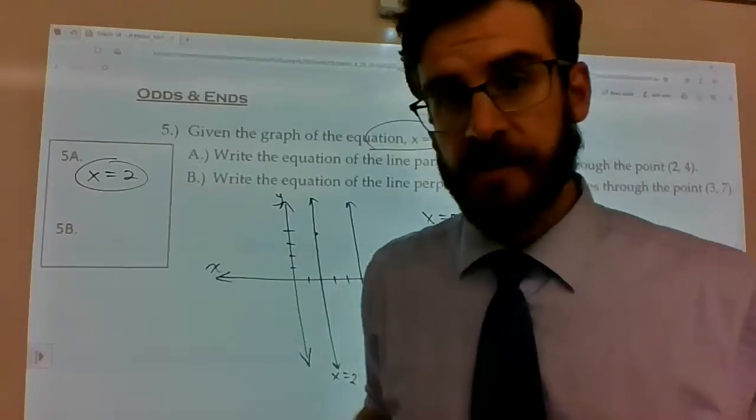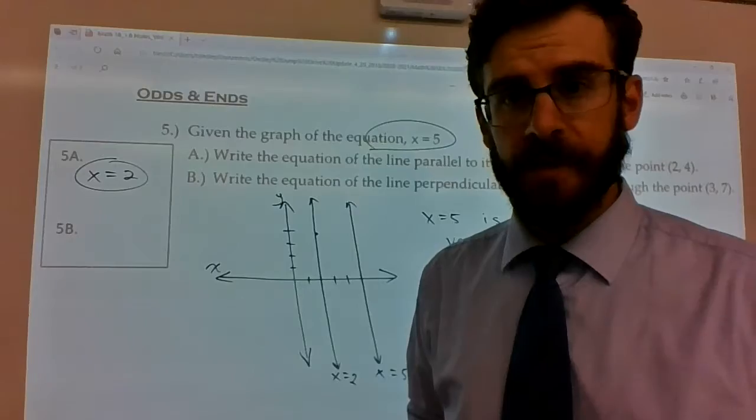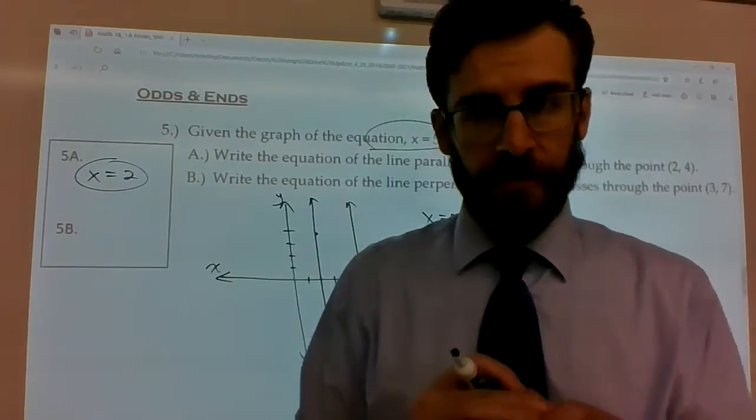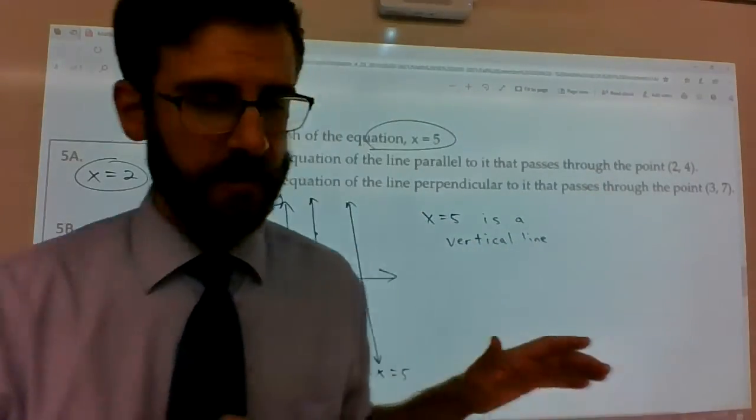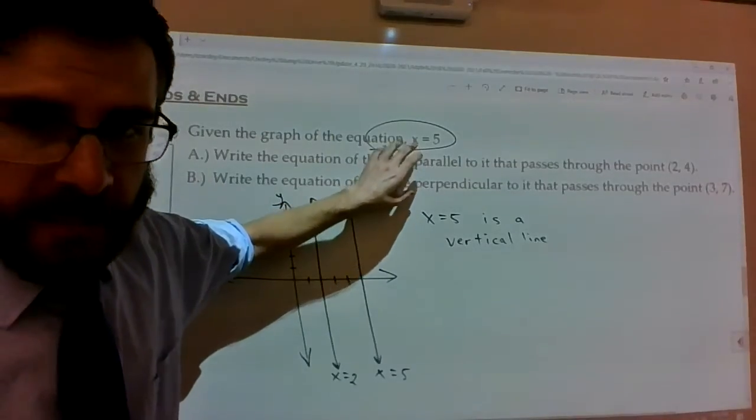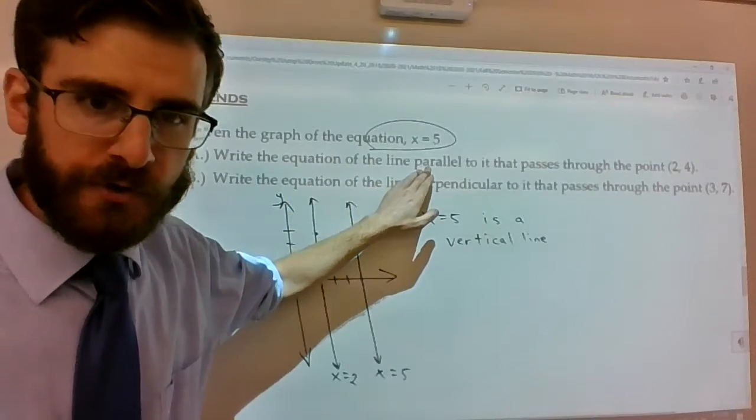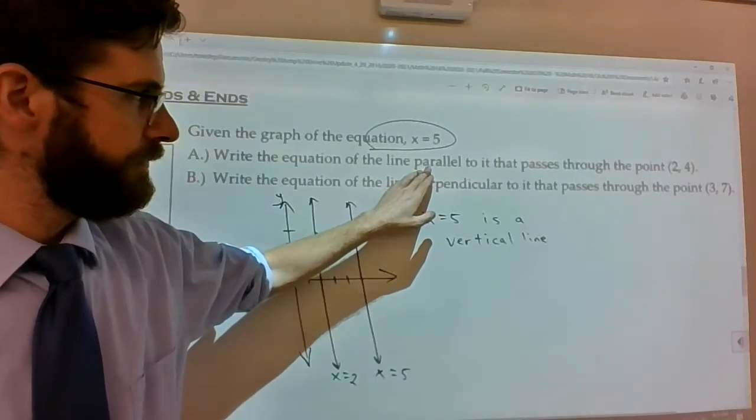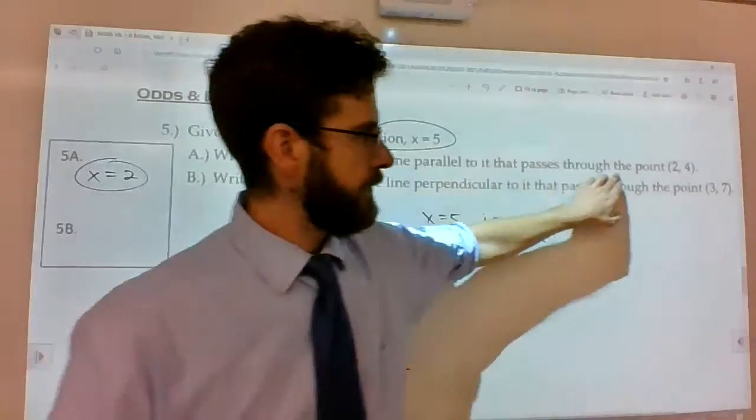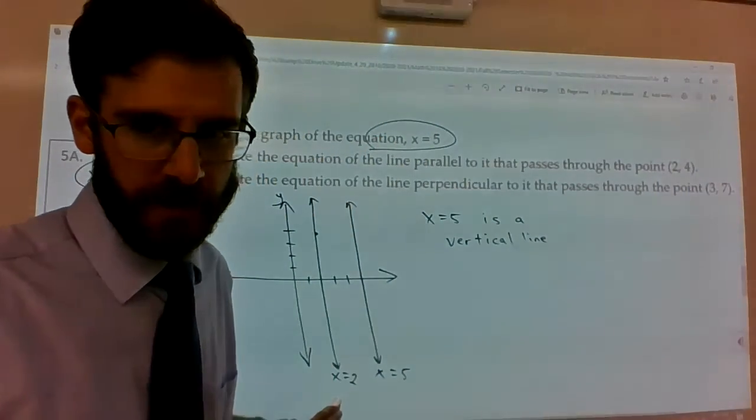Notice we didn't do step 1, talk about the slope. Step 2, plug in for x, y, and m. Step 3, rewrite the equation. This was kind of a one-step deal. If you know that the line given to you is a vertical line, any parallel line has also got to be vertical to it. And the x coordinate is what decided what that equation should be.